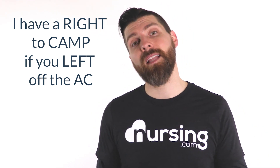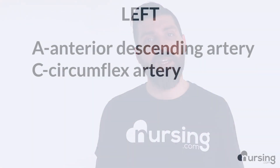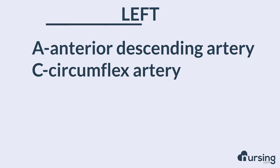Let's look at the left side of the heart. You have left, which is the A, and you have the anterior descending artery. And then you have C, which is the circumflex artery. Use this mnemonic to remember all the structure of the coronary arteries: 'I have a right to camp if you left off the AC.'